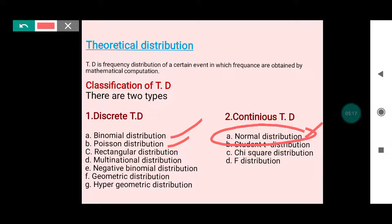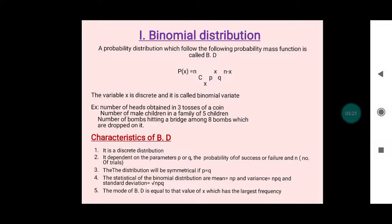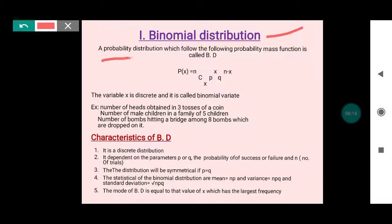As per your syllabus, the first unit is binomial and Poisson distribution, and the second unit is normal distribution. Binomial and Poisson come from discrete frequencies, and normal distribution comes from continuous theoretical distribution. Now we will discuss from the main theoretical concept from your syllabus, that is binomial distribution.